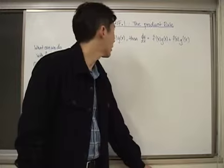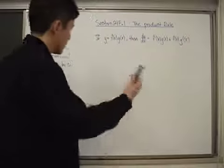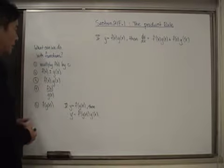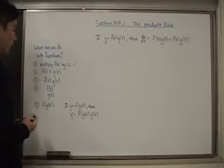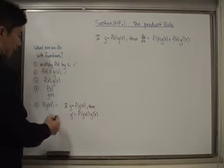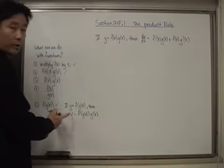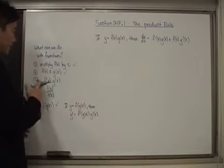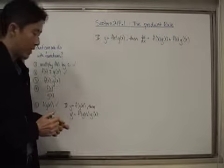Let's take a look at our next rule, which is called the Product Rule. Let's review what we've covered so far — there are things we cannot differentiate yet, and we're going to need to use the chain rule more often. The only two rules we really have left to cover are the product rule and the quotient rule.